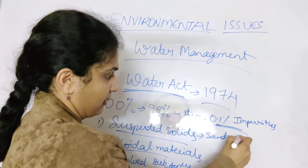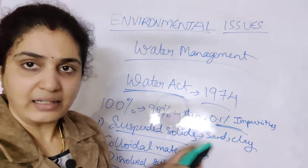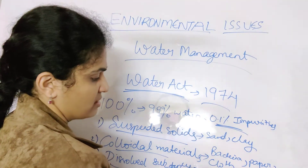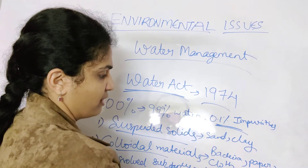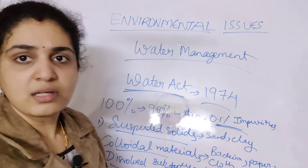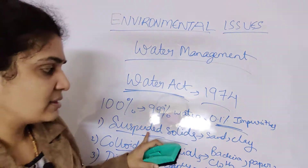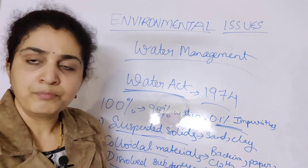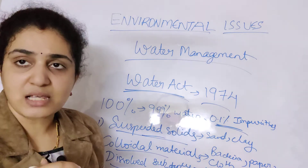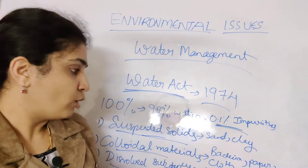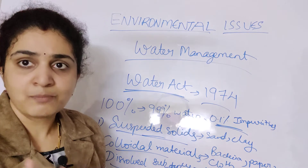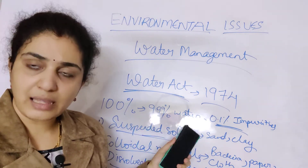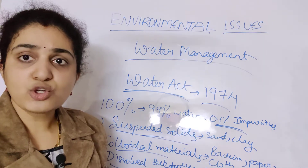Under suspended solids, examples are sand and clay — they are suspended deep in the water. Colloidal materials include bacteria, paper, and cloth. Dissolved substances include nitrates, phosphates, and other chemicals and nutrients. These are the three main impurities that make water unfit for human use.